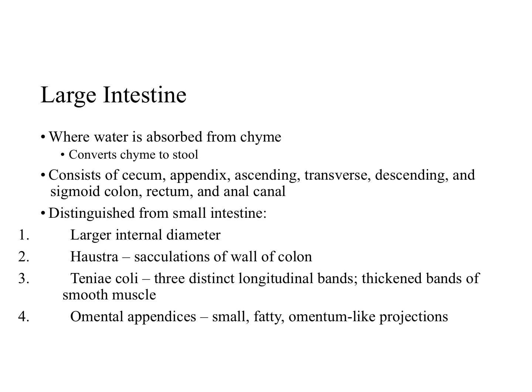The large intestine can be distinguished from the small intestine by the following features. The large intestine has a larger internal diameter. It contains haustra, which are sacculations of the wall of the colon between the tenia coli. The tenia coli are three distinct longitudinal bands of muscle, and the omental appendices are small fatty omentum-like projections.